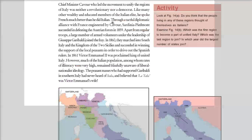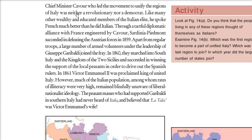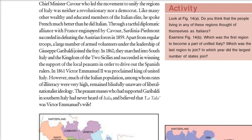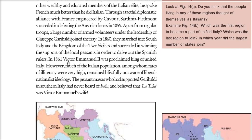Chief Minister Cavour led this movement. Interestingly, Cavour was neither a revolutionary nor a democrat, and he spoke mostly French rather than Italian. But he made a very tactful diplomatic alliance with France, and Sardinia-Piedmont succeeded in defeating Austrian forces in 1859. Volunteers under the leadership of Giuseppe Garibaldi joined this fight, and in 1860 they also entered the Two Sicilies, winning with the support of local peasants.